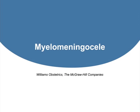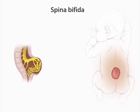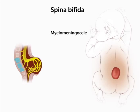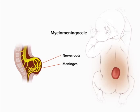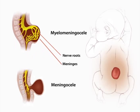Spina bifida refers to incomplete closure of the spine. Myelomeningocele is a common form of open spina bifida, and a defect may involve several vertebrae. Through this defect, a meningeal sac that contains nerve roots may herniate. Less commonly, a meningocele develops, and only a meningeal sac herniates through the vertebral defect.